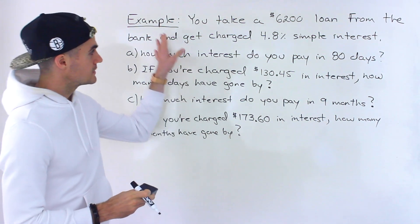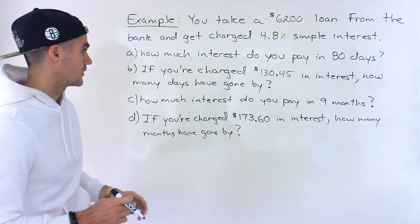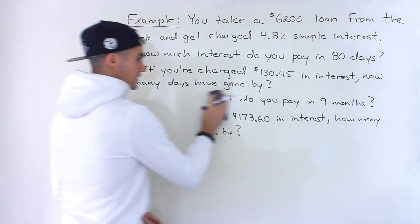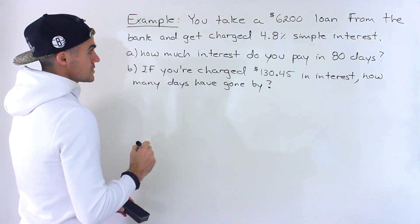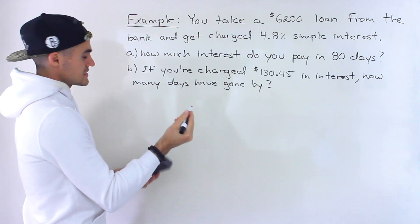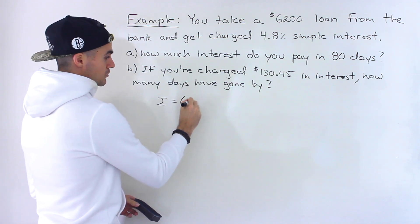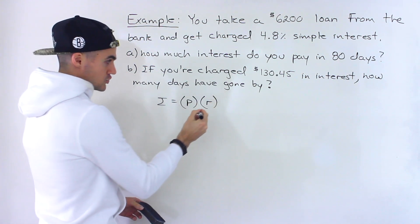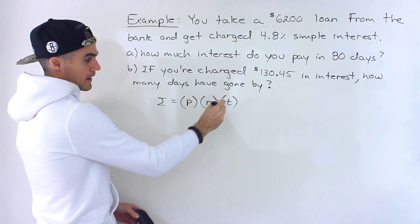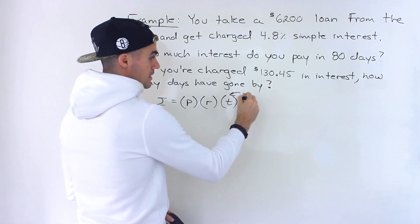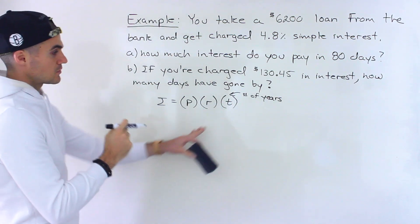So what we're doing is taking this scenario and presenting four different questions about it. I'll erase C and D for now and bring them back later in the video to get some room to work. In general, when dealing with simple interest, the amount of interest charged is equal to the principal amount times the interest rate times the number of years, represented as T.